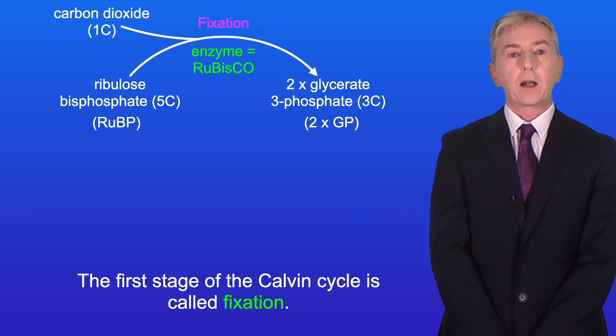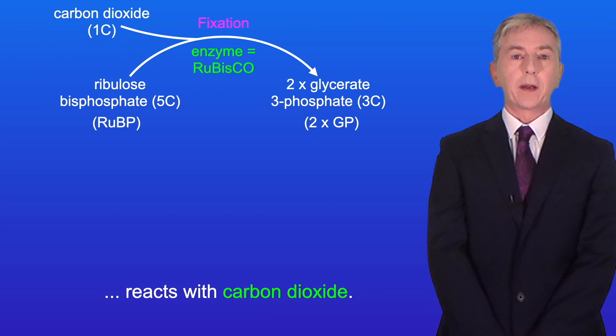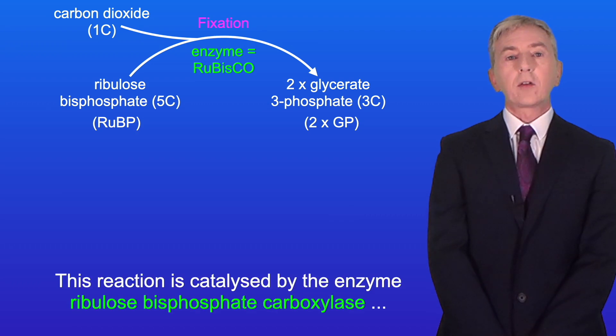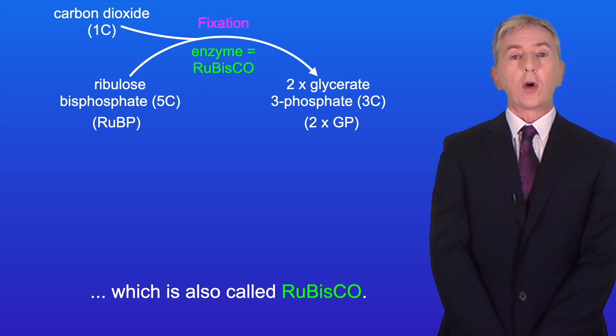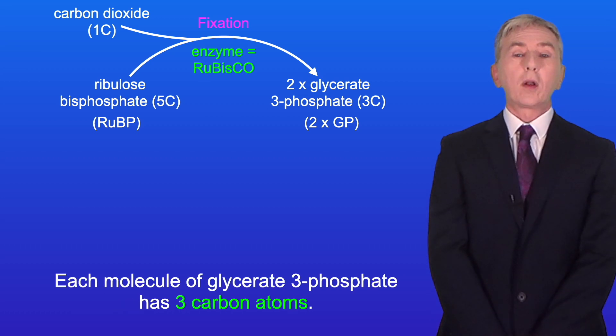The first stage of the Calvin cycle is called fixation. In this stage, the five-carbon molecule ribulose bisphosphate reacts with carbon dioxide. This reaction is catalyzed by the enzyme ribulose bisphosphate carboxylase, also called rubisco. From this reaction, we make two molecules of glycerate 3-phosphate. Each molecule of glycerate 3-phosphate has three carbon atoms.